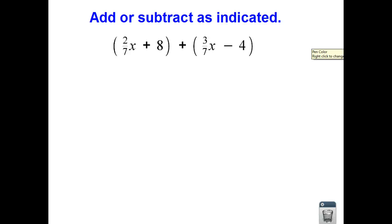So, let's just, we can line this up vertically. This is an addition problem. So I'm going to have 2 sevenths x plus 8. We're going to add that. This is the addition sign to our 3 sevenths x minus 4.